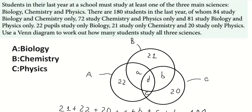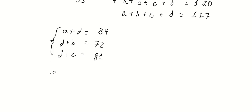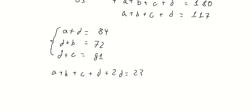We also have 81 students studying biology and physics, so D plus C equals 81. If we sum all three of these equations together, we get A, B, C, and 2D. Calculating that sum gives us 237, so we have A plus B plus C plus 2D equals 237.